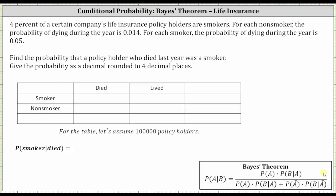In this example, we'll determine a conditional probability using a table as well as Bayes' theorem. Four percent of a certain company's life insurance policyholders are smokers. For each non-smoker, the probability of dying during the year is 0.014. For each smoker, the probability of dying during the year is 0.05. We're asked to find the probability that a policyholder who died last year was a smoker. This is conditional probability — the probability a policyholder was a smoker given the policyholder died during the year, which we indicate using the notation shown here.